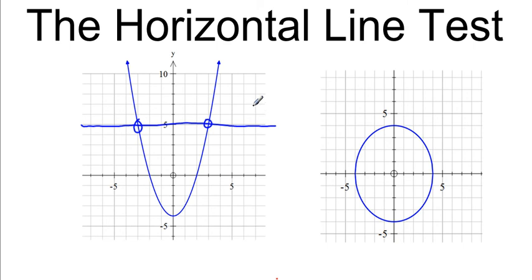In order for the inverse of the graph to be a function, it can only touch one point. We should know that when we take the inverse of a quadratic or the inverse of the graph, a parabola, it's not going to be a function.